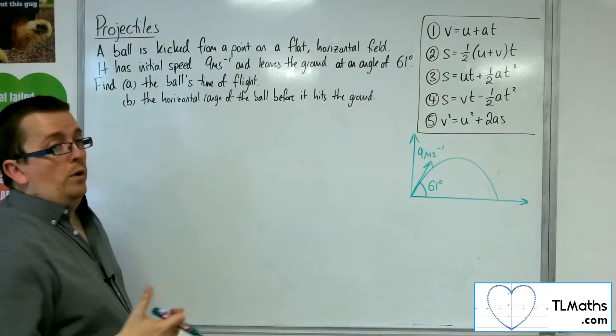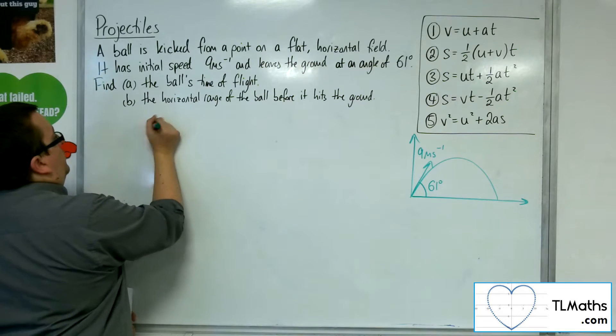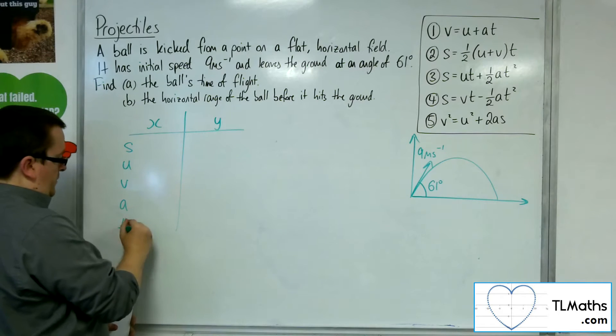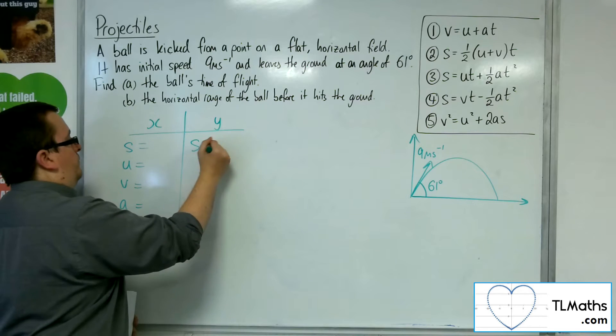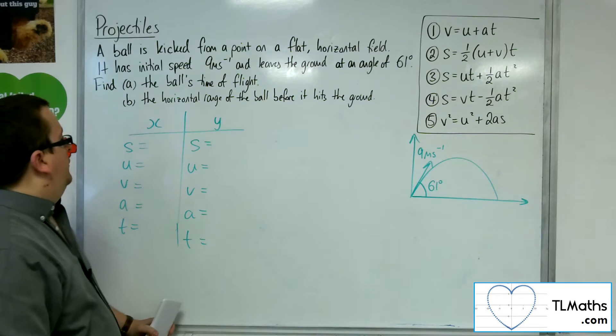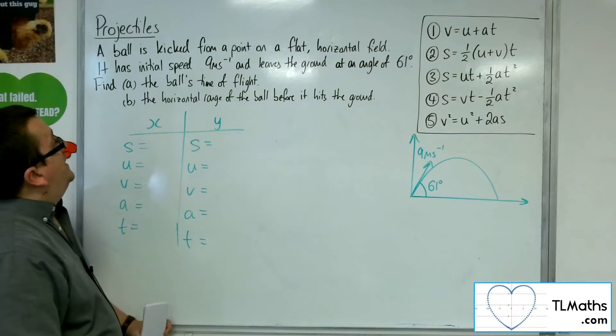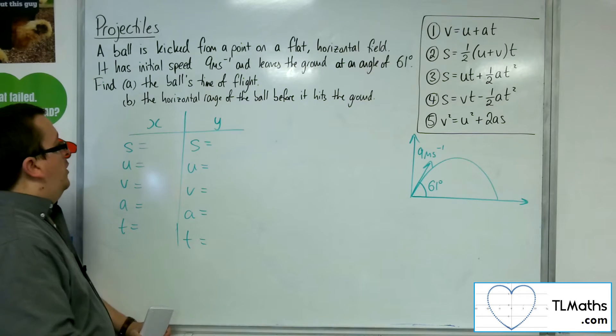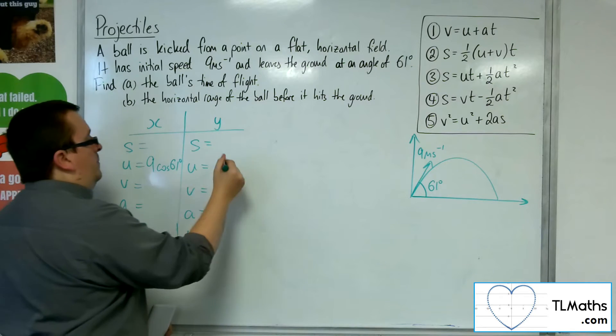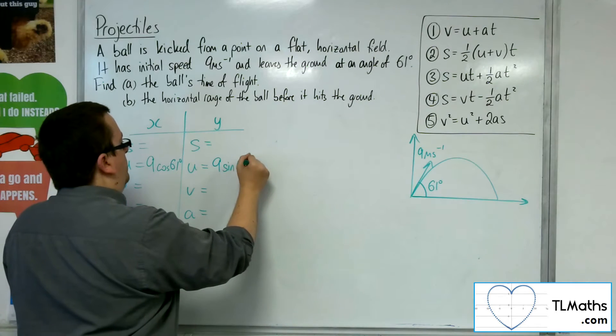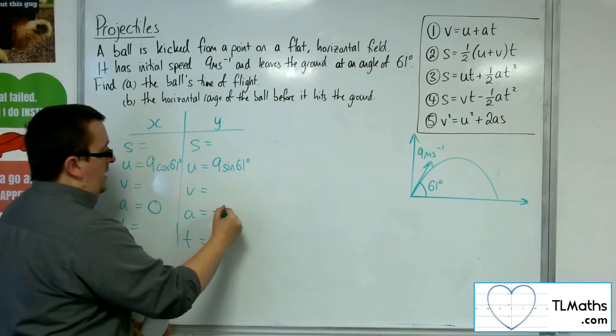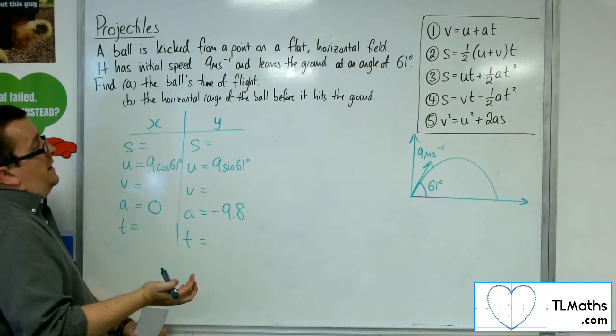So what we want to do is we want to set up the horizontal and vertical SUVAT equations. So, SUVAT information. So what have we got? The initial speed is 9 metres per second. So the horizontal component will be 9 cosine 61 and the vertical component will be 9 sine 61. We don't know S, we don't know V. The acceleration is 0 for the horizontal and minus 9.8 for the vertical. We don't know the T.